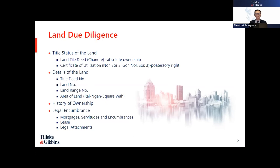For certificates of utilization, they are similar to land title deeds but represent a possessory right. They are segregated into two types: Nor Sor Sam and Nor Sor Sam Gor. The difference is that Nor Sor Sam Gor is a more recently issued document and also has a master survey of the area. In land due diligence, we must also identify the title deed numbers, land number, land range number, and area — measured in Thai land area units of Rai, Ngan, and Square Wah — as well as the chronological history of ownership.